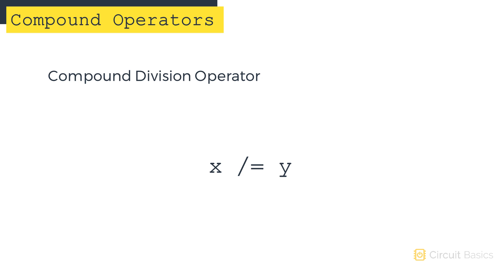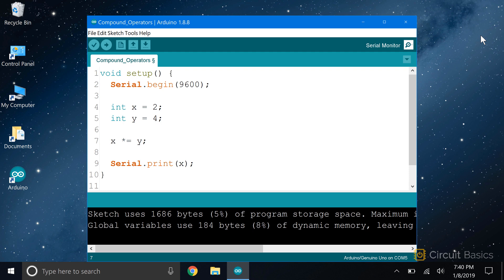Lastly, there's the compound division operator. The compound division operator is written with a forward slash and an equal sign. This takes a variable, divides it by another variable, then stores the result in the first variable. It's equivalent to the expression x equals x divided by y. So if I change this to x forward slash equals y, we should get 2 divided by 4, or 0.5.